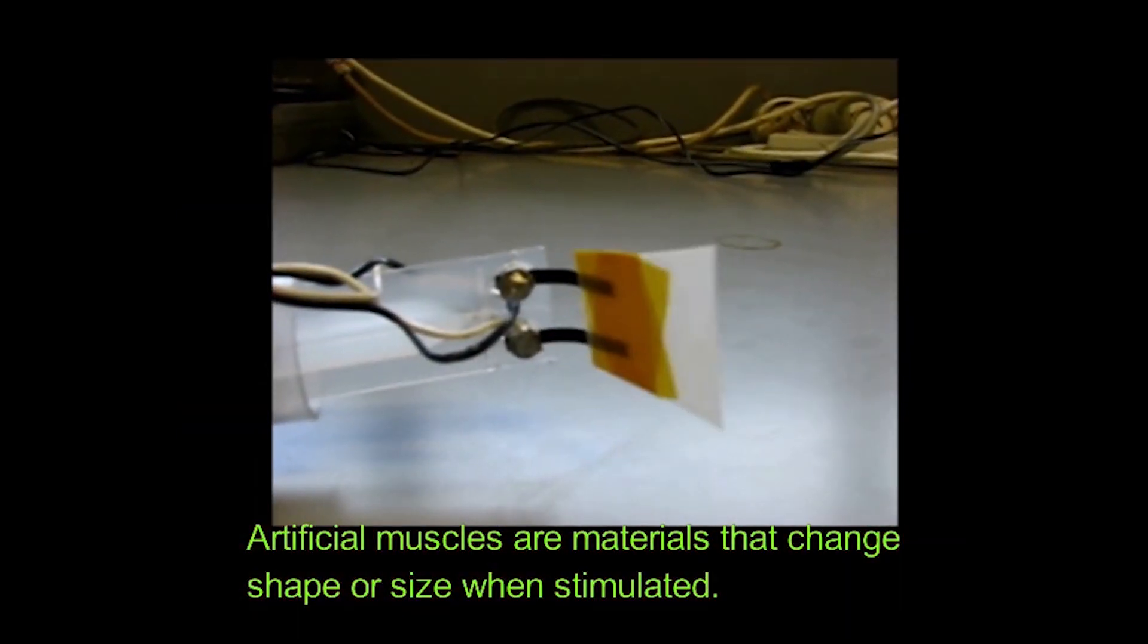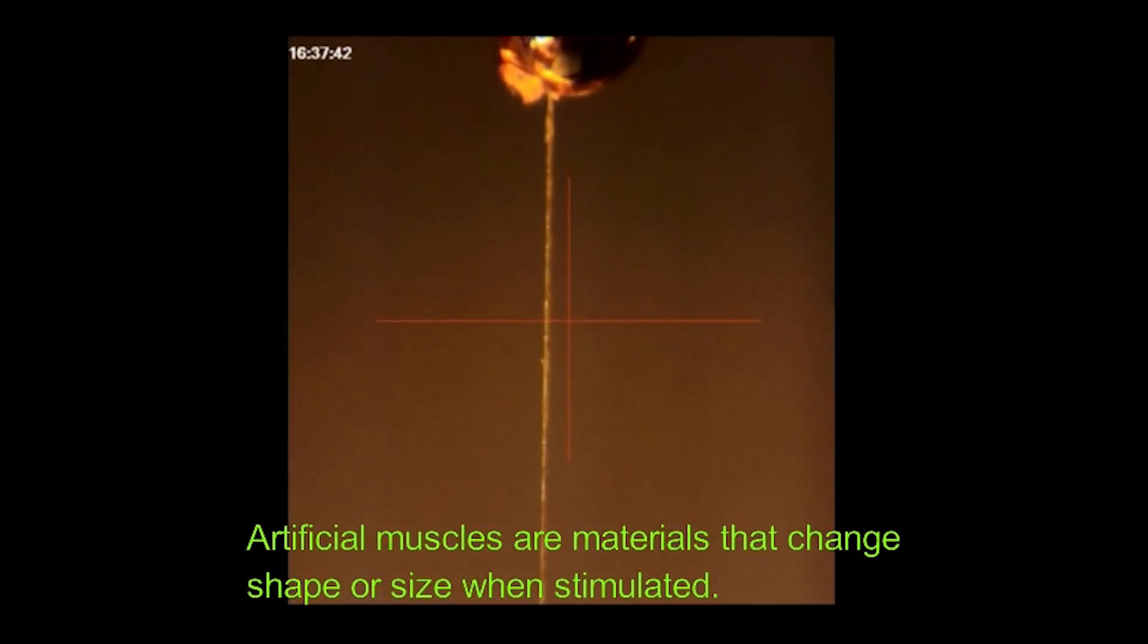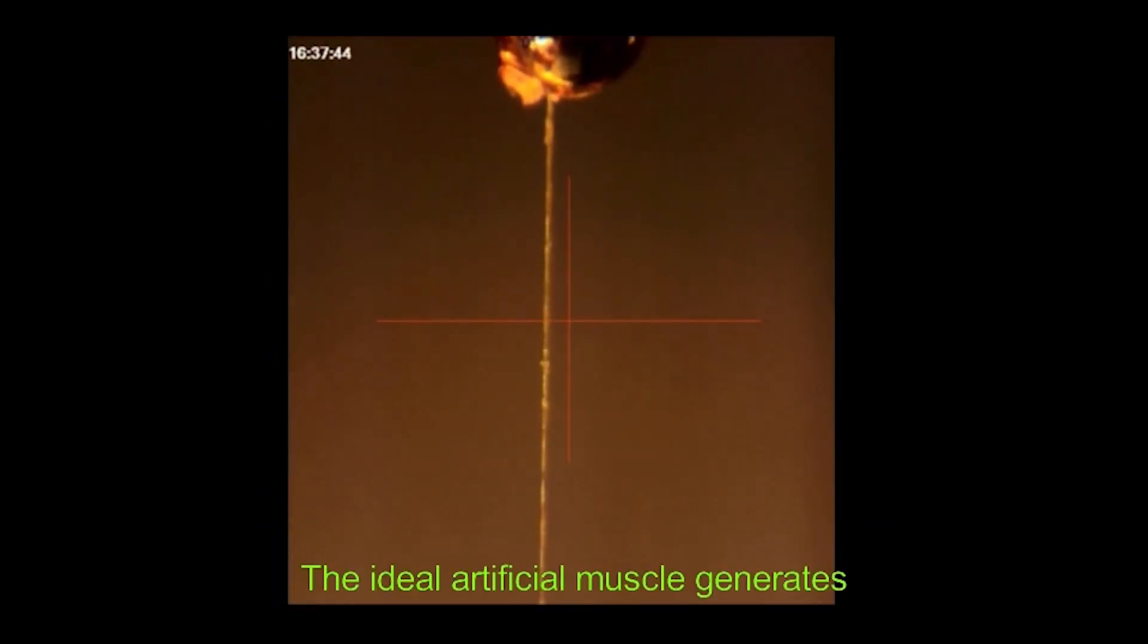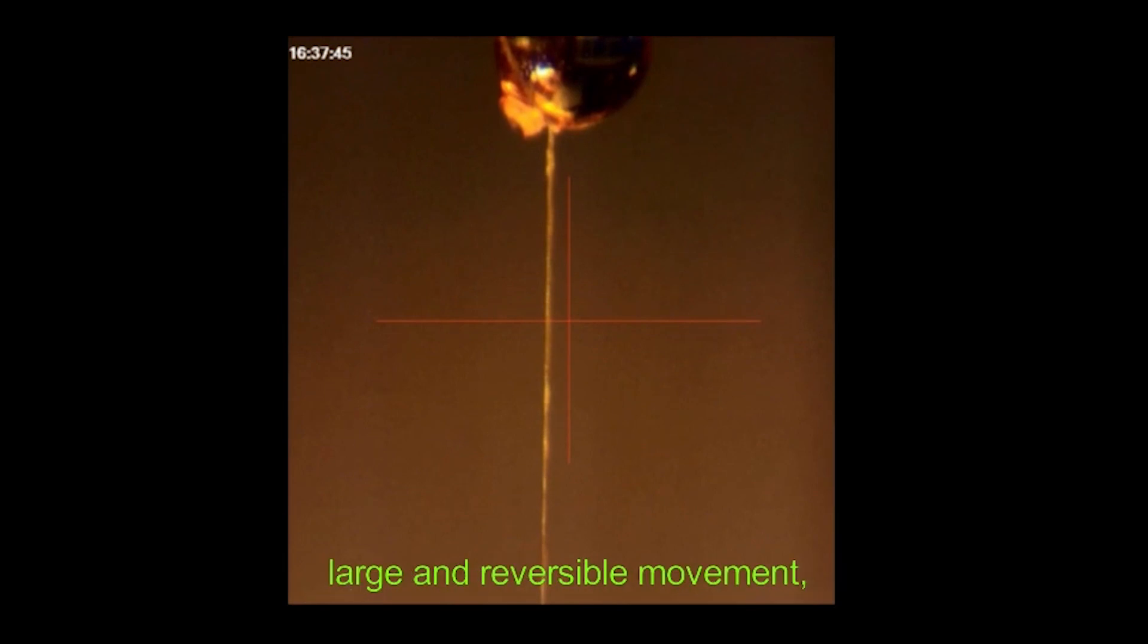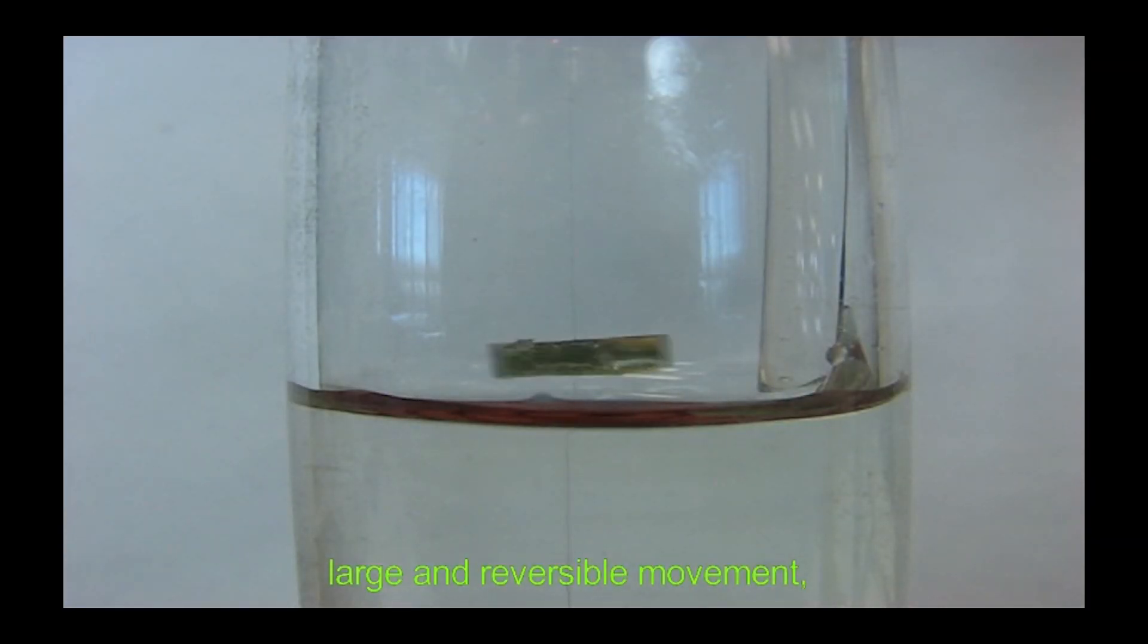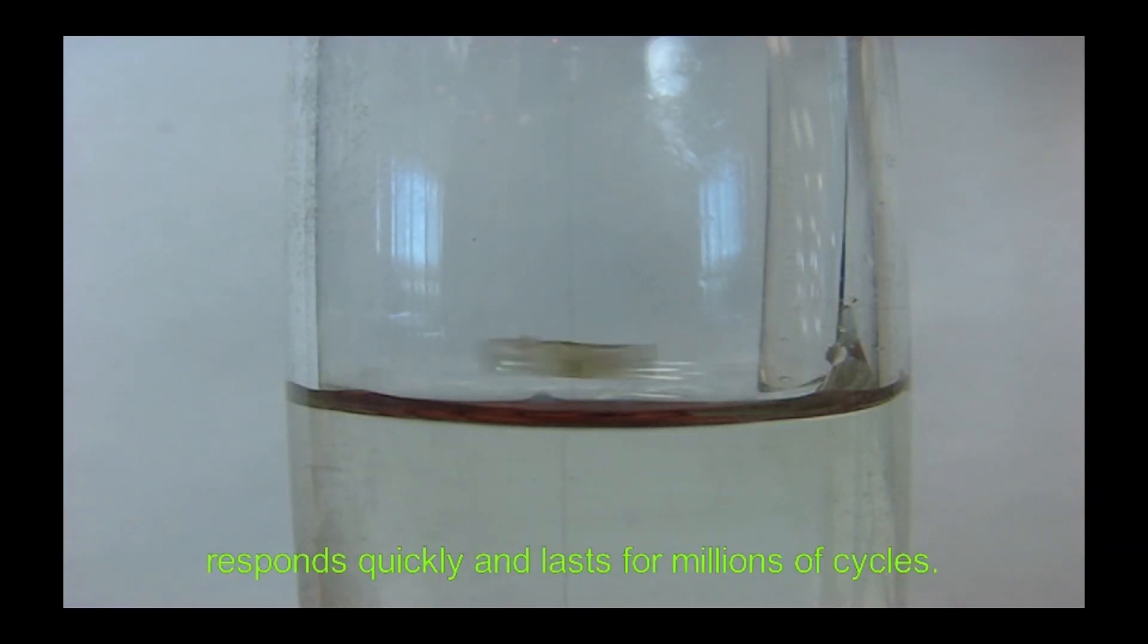Artificial muscles are materials that change shape or size when stimulated. The ideal artificial muscle generates large and reversible movement, high mechanical work output, responds quickly, and lasts for millions of cycles.